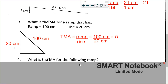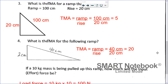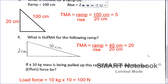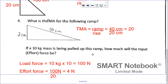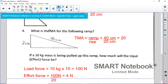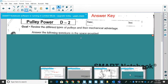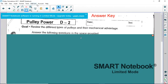Number three is 100 centimeters over 20 centimeters, which equals 5. Number four is 40 centimeters over 20 centimeters, which equals 2. Then the extra question: 100 newtons of load force divided by 20 mechanical advantage gives you 4 newtons as the effort force.